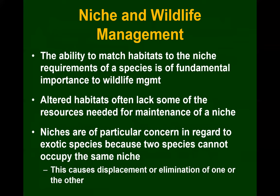The ability to match habitats to the niche requirements of a species is of fundamental importance in wildlife management — we need to understand what animals need in order to give them what they need. Altered habitats often lack some of the resources needed for the maintenance of a niche. Whenever humans do something to a habitat, we typically alter something needed for an animal's niche, and we don't necessarily understand all the intricacies. For example, a bird eats an insect, that insect eats a plant — if we wipe out that plant thinking it's a weed, the insect disappears, and the bird disappears too.